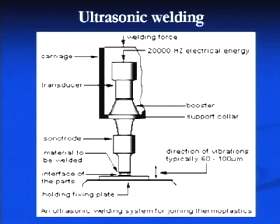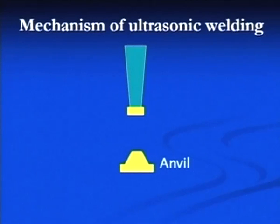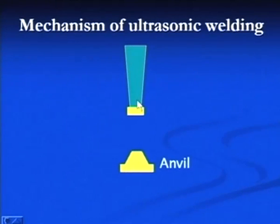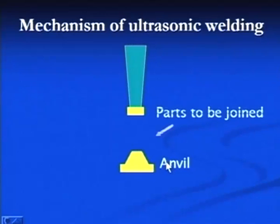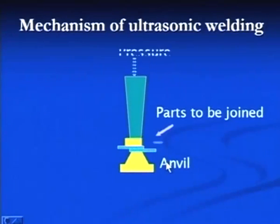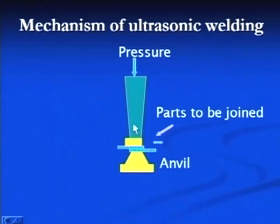The mechanism of ultrasonic bonding involves an anvil and a sonotrode tip. Joining of the two parts in ultrasonic welding takes place through both shear stresses and compressive stresses, which are responsible for producing the joint at the interface.